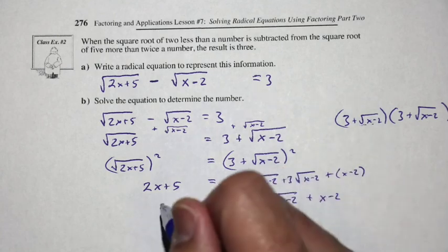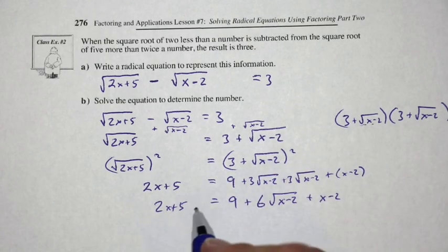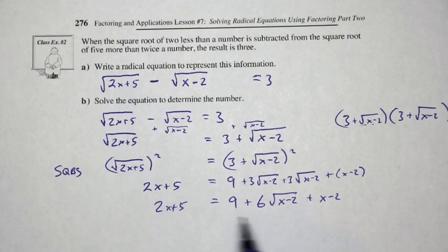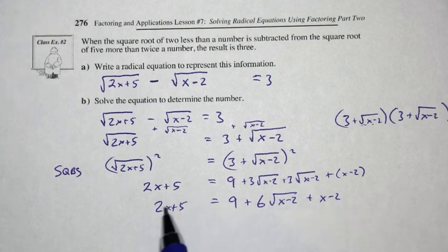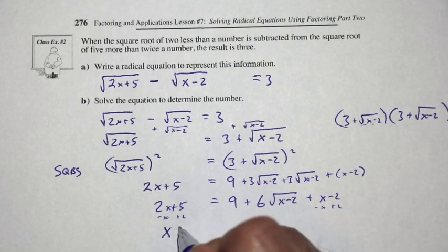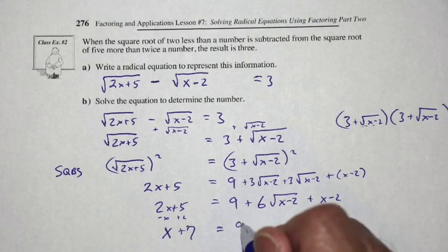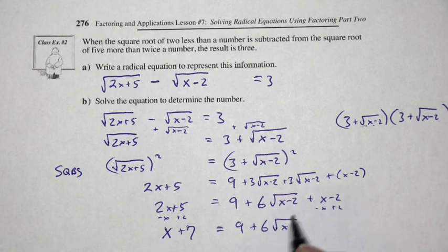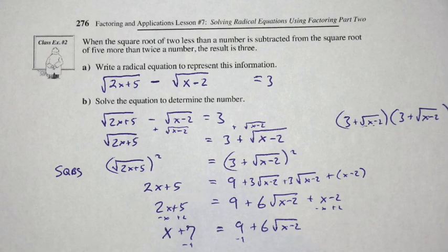So we have 2x plus 5 equals 9 plus 6 times the square root of x minus 2, plus x minus 2. Let's simplify: subtracting x and adding 2 to both sides gives x plus 7 equals 9 plus 6 times the square root of x minus 2. Now isolating the square root, we subtract 9 from both sides and get x minus 2 equals 6 times the square root of x minus 2.